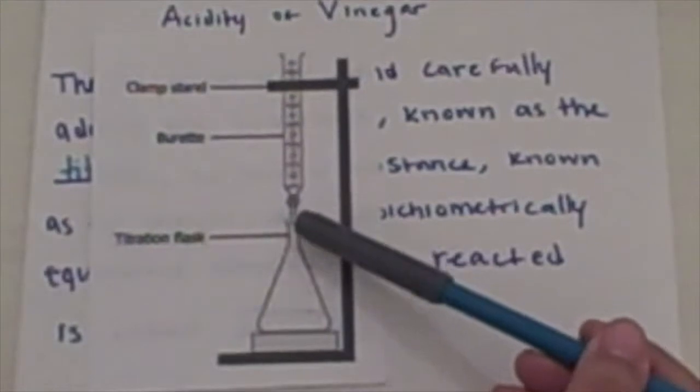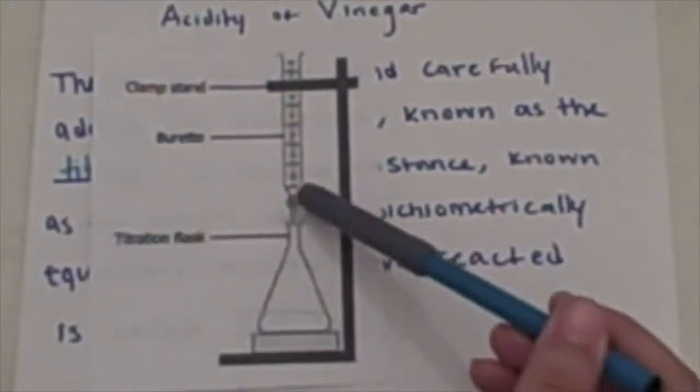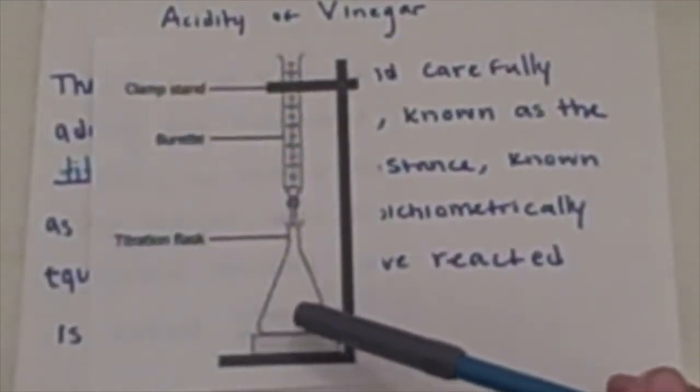And then dropwise, drop by drop, you'll be adding the titrant into the analyte until there's a color change.